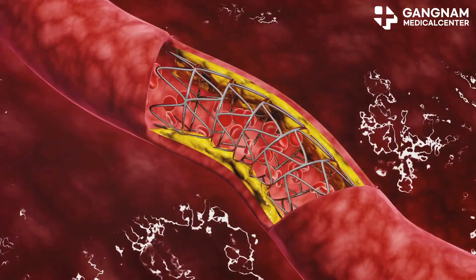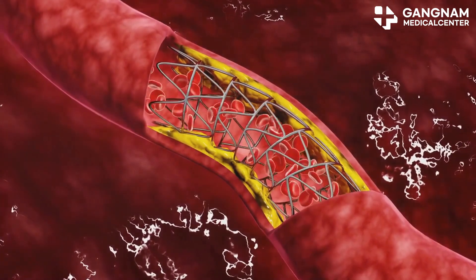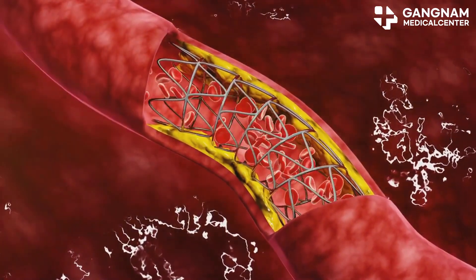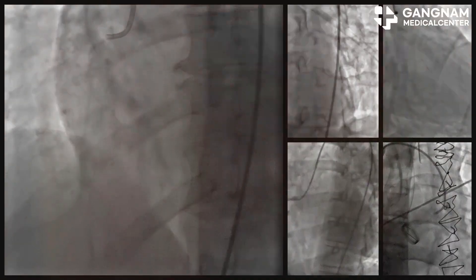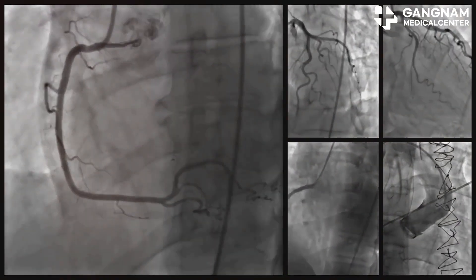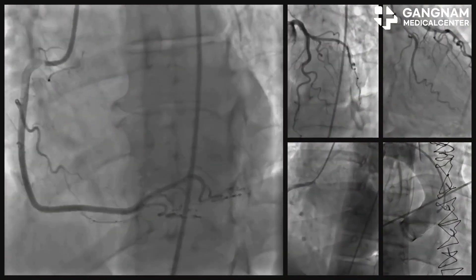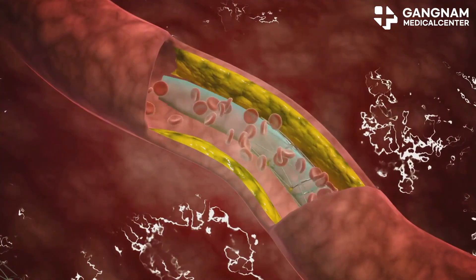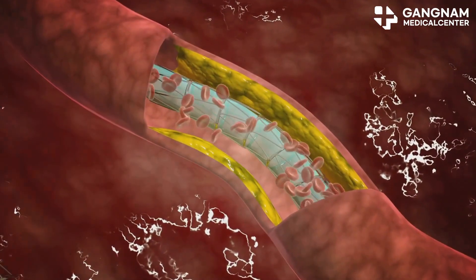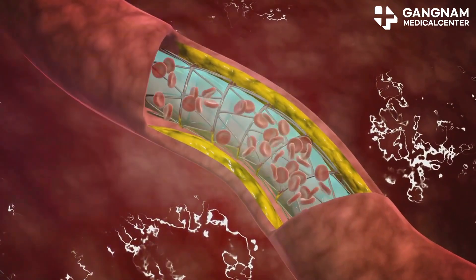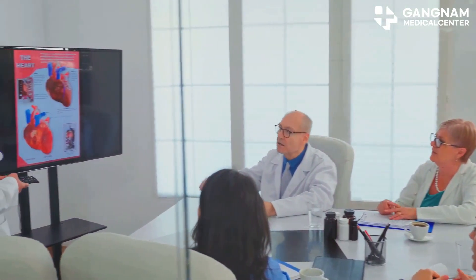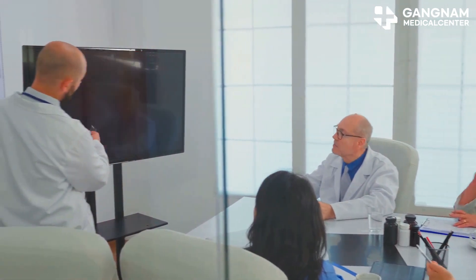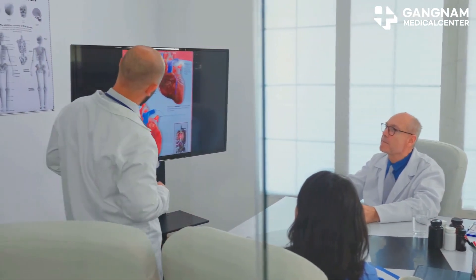Now let's talk about myocardial infarction, commonly known as a heart attack. It happens when the arteries supplying blood to the heart muscle get blocked or narrowed. The main culprits? Atherosclerosis and plaque rupture. Cholesterol, fats, and calcium form plaques that can block blood flow. If a plaque ruptures, it can lead to a blood clot, causing a heart attack.